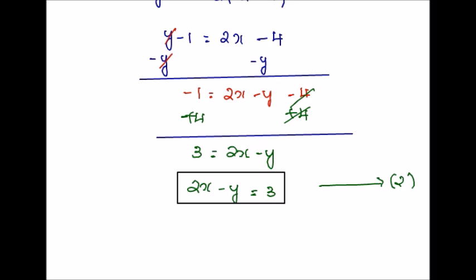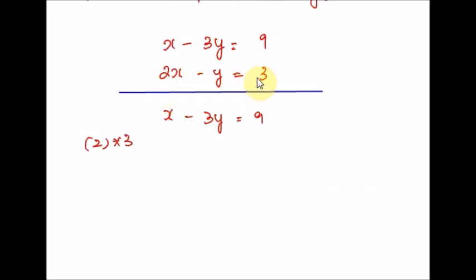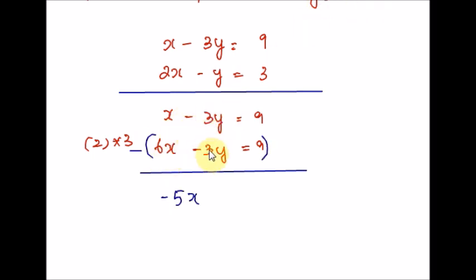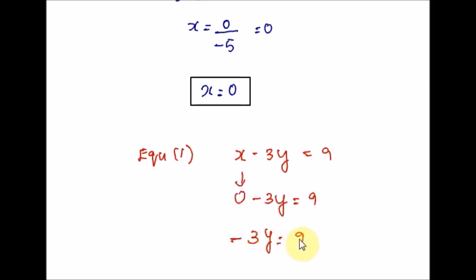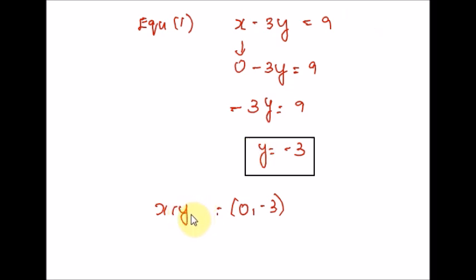Now we solve equations 1 and 2 simultaneously to find the values of x and y. Multiply equation 2 throughout by 3, then subtract the two equations — the y terms cancel, and we get x value by dividing throughout by negative 5, giving x = 0. Substituting x = 0 into equation 1 and dividing by negative 3, we find the y value, so point S is (0, negative 3).